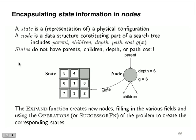The state of anything is represented as a physical configuration. A node is the data structure consisting of part of the search tree, which includes the parent, the child, and the depth. States do not have parents, children, depths, or path costs — they just have states associated with them. On a node we have information about how deep it is, what characteristics it has, and what children are associated with it. In data structures, we learn how to create a tree, take the tree and reduce it down to a list, then process the list to calculate something — which tells you it's just the representation of the data.